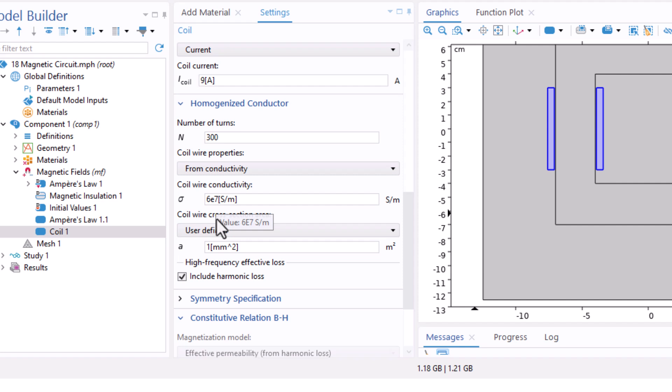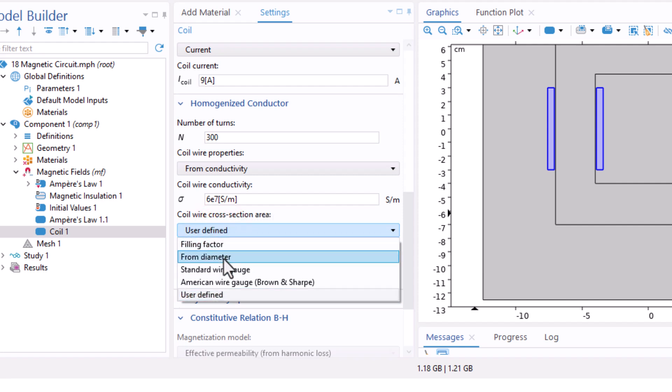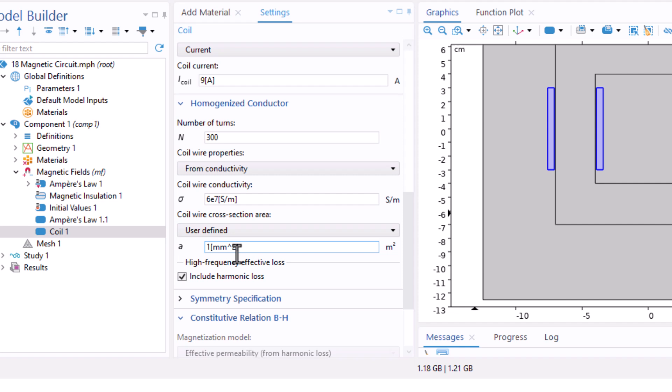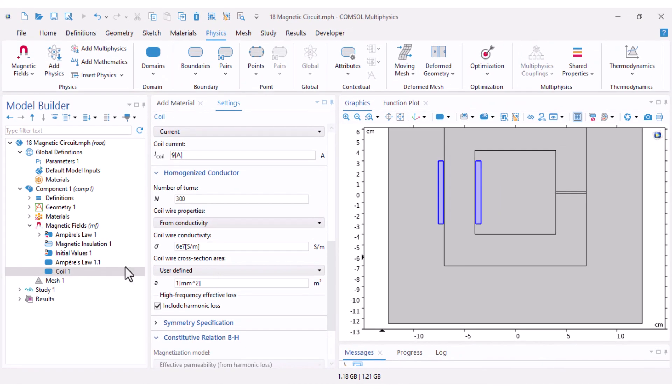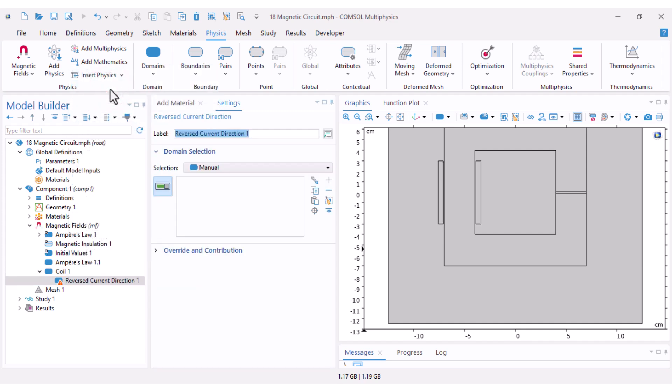According to the problem a 9 ampere current is fed through the winding with 300 turns. I change the coil wire cross-sectional area to user-defined and one square millimeter. Next we need to tell COMSOL that the current in one coil segment is reversed. Right click coil, add reverse current direction, and select one of the coils.